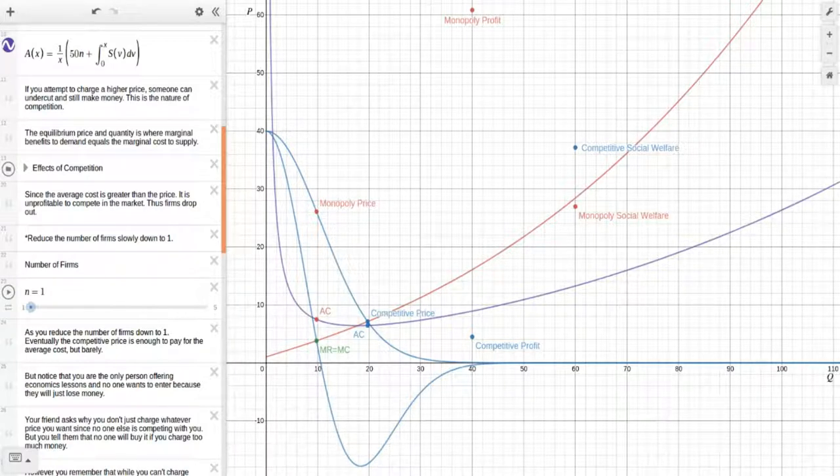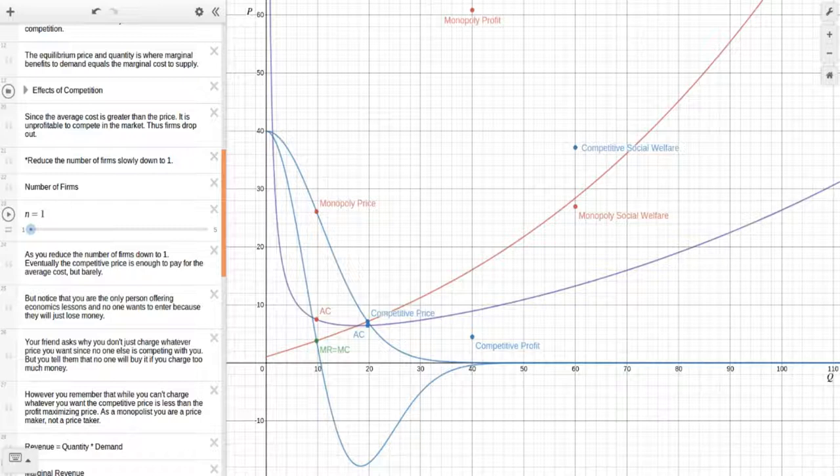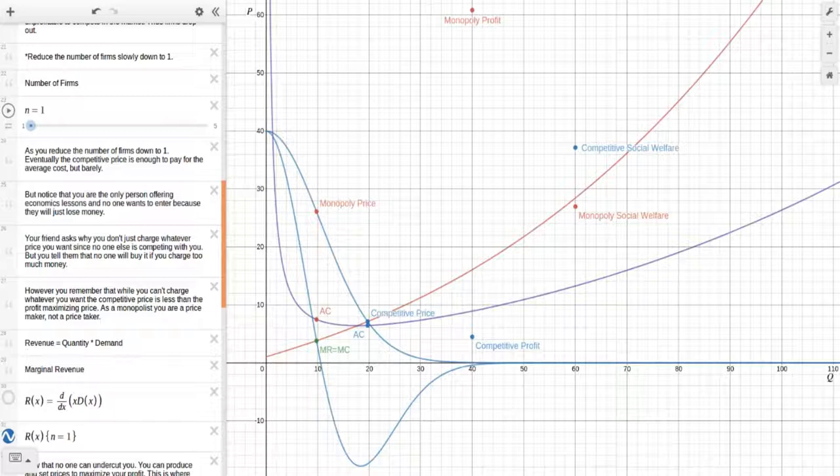Your friend asks, why don't you just charge whatever price you want since no one else is competing with you? But you tell them that no one will buy it. If you set a price too high, then not enough people will demand it. However, you remember that while you can't charge whatever you want, the competitive price is less than the profit maximizing price. As a monopolist, you are a price maker, not a price taker. What this means is that since you control the whole supply, you can set the price and then this is the price people will have to pay. Sure, you may only sell a certain quantity, but you can technically set the price. While on competitive pricing, the price would have to be set by competition. Some person could always undercut you and make the profit. So the incentive is towards the competitive equilibrium.